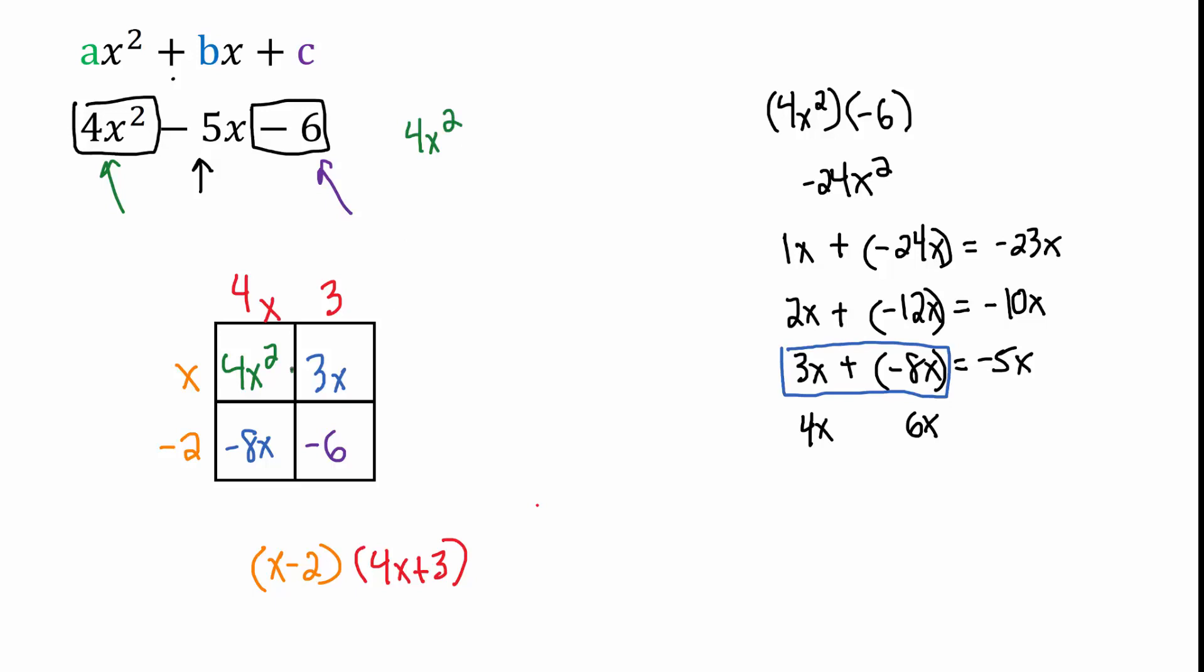I have 4x squared. These are like terms. When we combine those I have minus 5x, and ending with my minus 6. So that's the trinomial that I'm left with. And this is the trinomial that I started with.